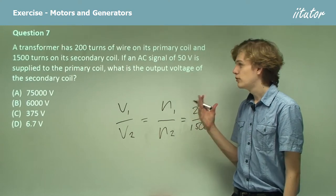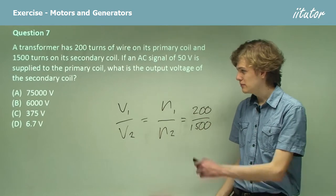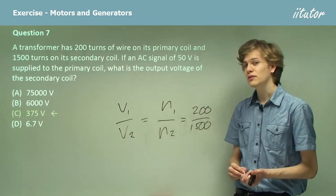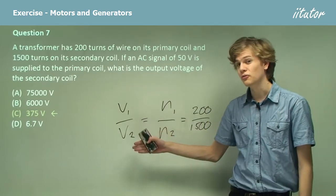So if the AC signal of 50 volts is supplied to the primary coil, V1, then V2 is going to be 375 volts. Makes sense, right? You can substitute in the numbers yourself if you don't believe me.